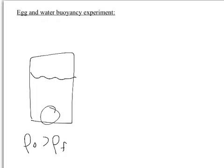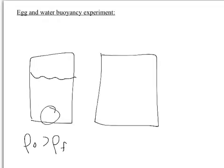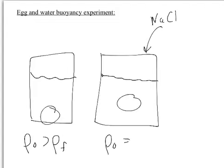There it goes — see how the egg is now suspended in the water? It's fully submerged but suspended. At this point the egg's density is equal to the water's density. When the egg's density is less than the water, it'll float to the top. Currently we're in the in-between stage — we've added NaCl (table salt) and now the density of the object equals the density of the fluid.